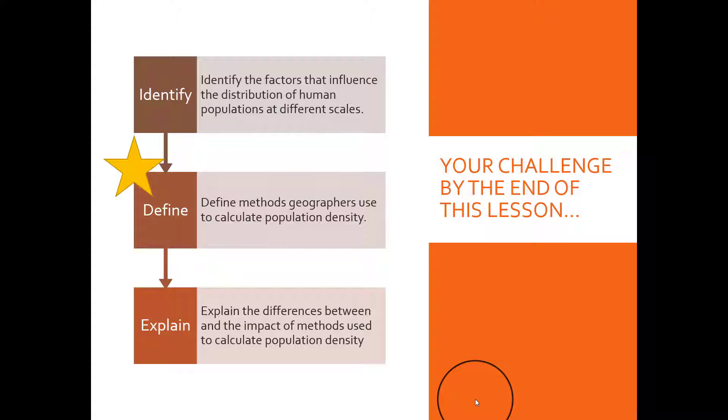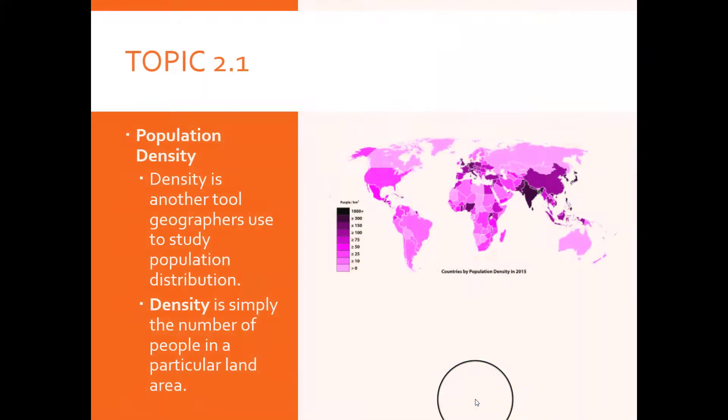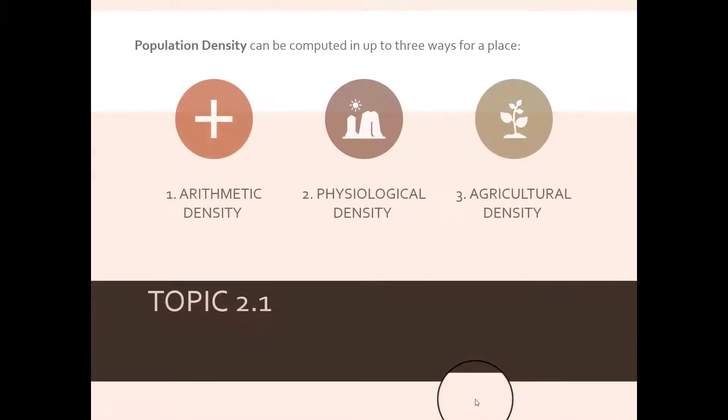Population density basically is another tool that geographers use to study population distribution. Density is simply the number of people in a particular area of land, looking at how many people occupy that space. Population density can be computed in three ways for a particular place: arithmetic density, physiological density, and agricultural density.